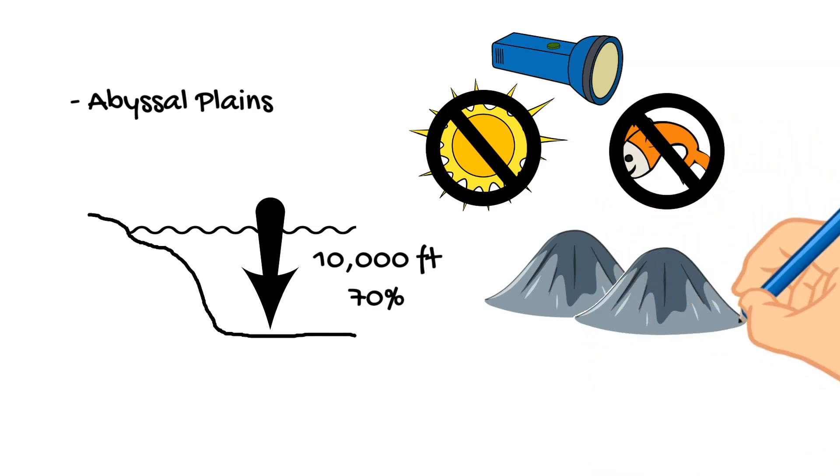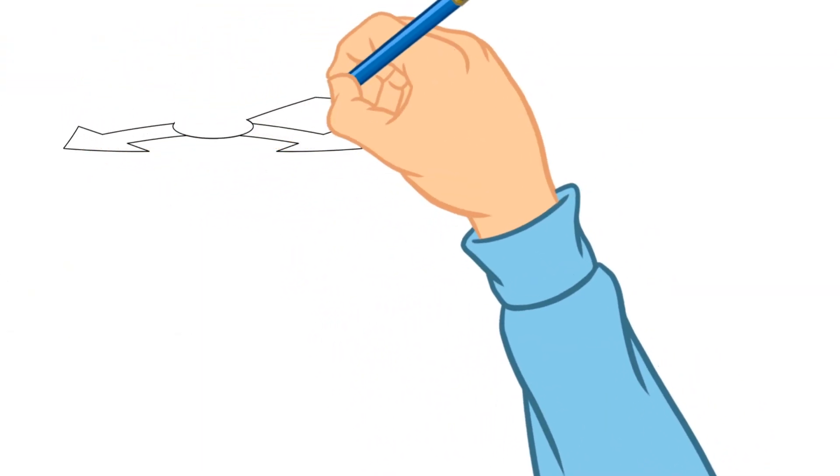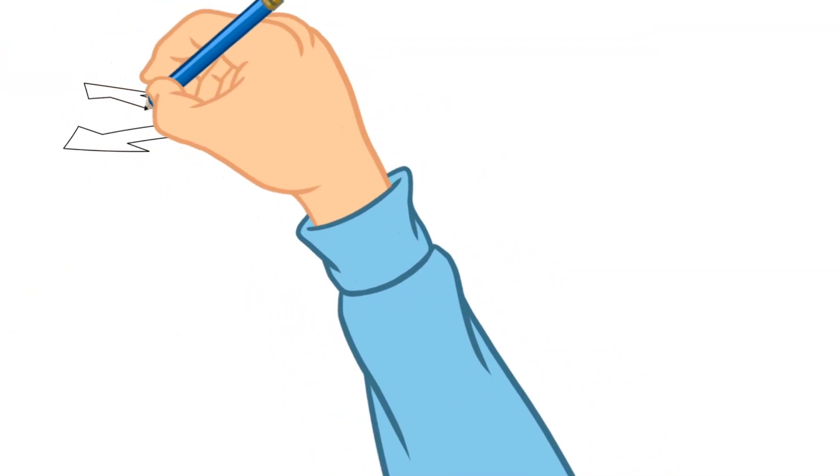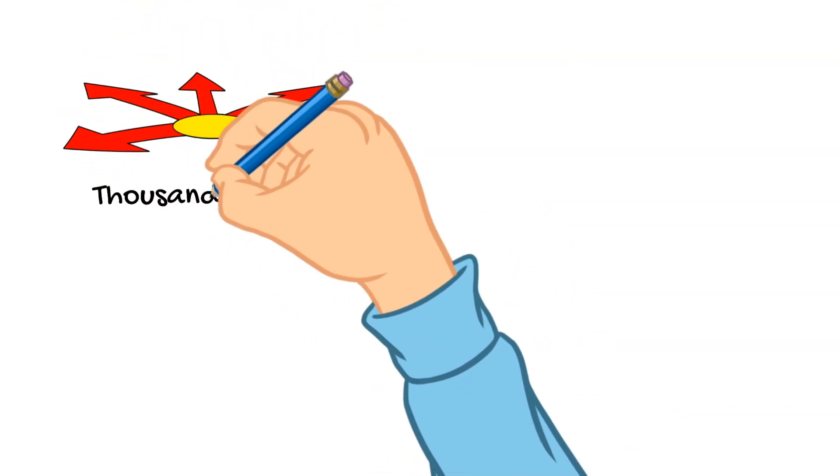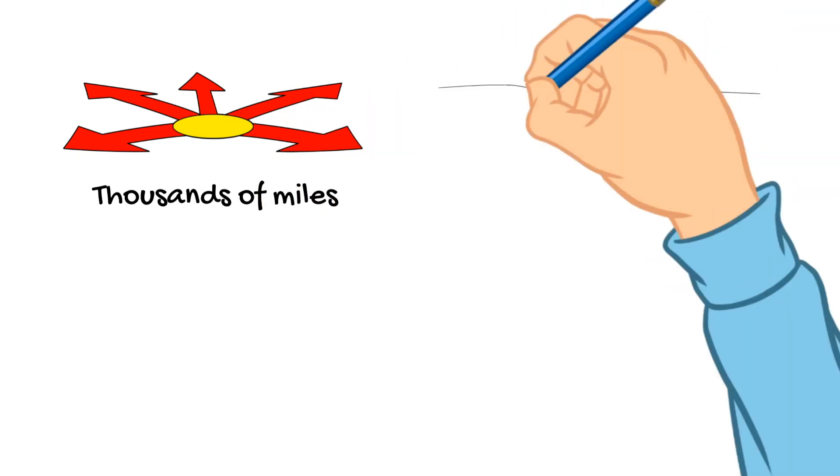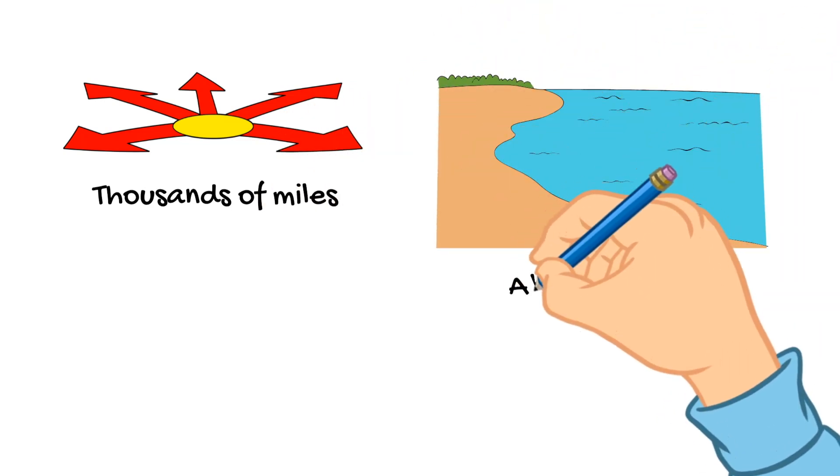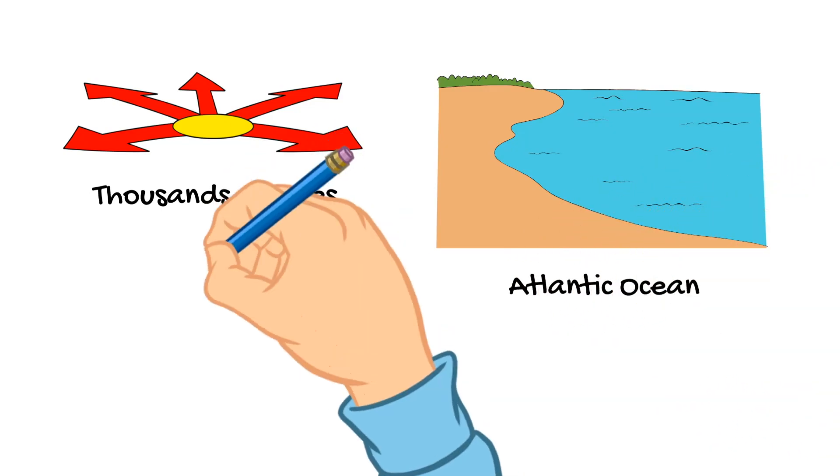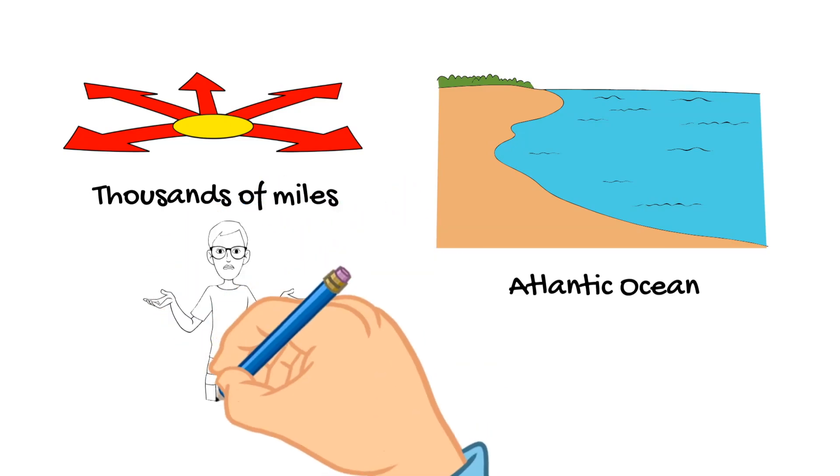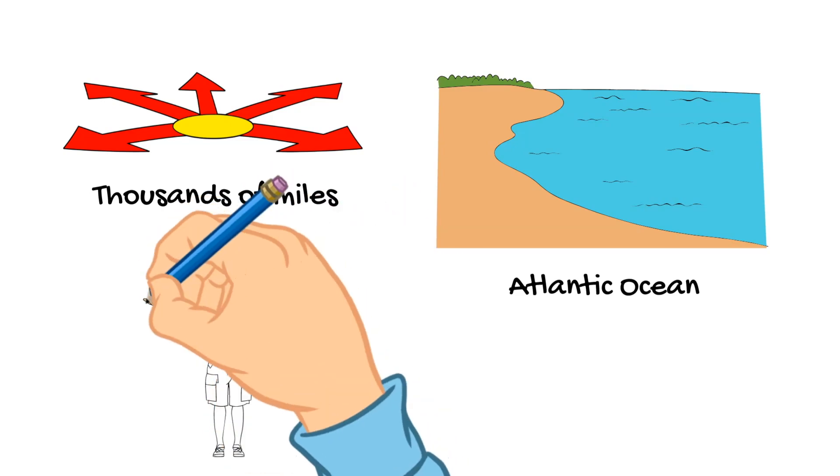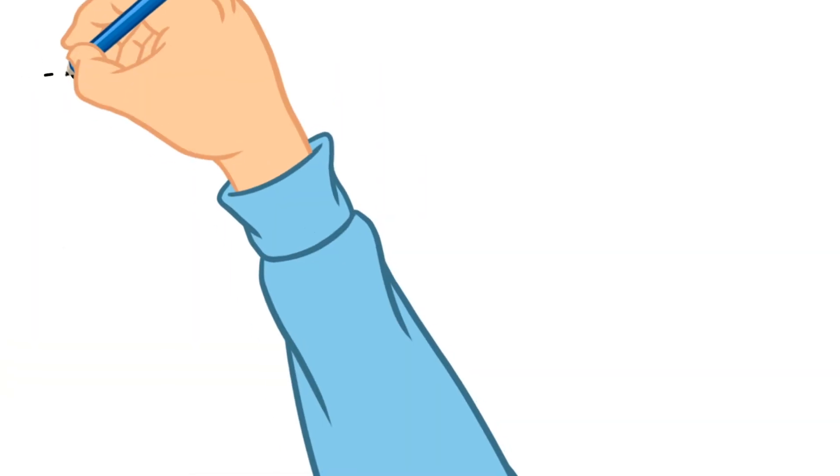An abyssal plain is about 10,000 feet below the water's surface and is huge. They can extend for thousands of miles. And the Atlantic Ocean is the most common place to find these abyssal plains. Most of the abyssal plains are mostly unexplored and scientists know very little about them despite it covering a vast amount of the earth's surface.